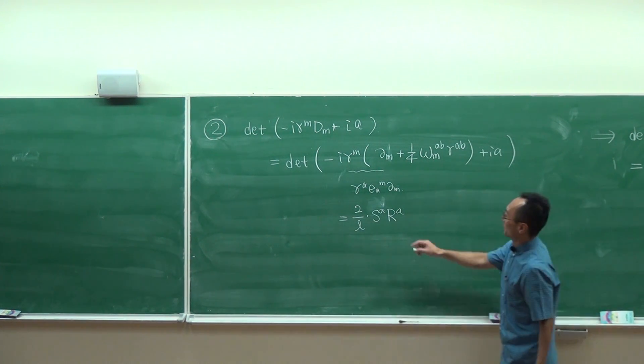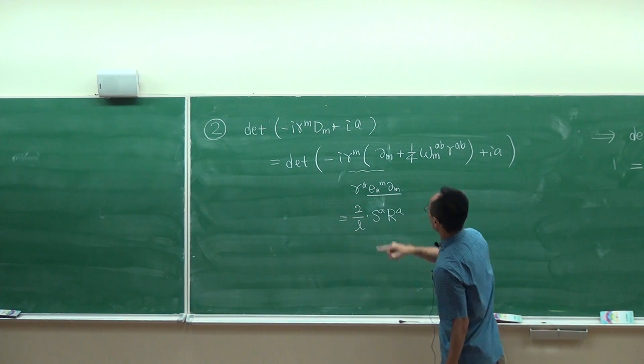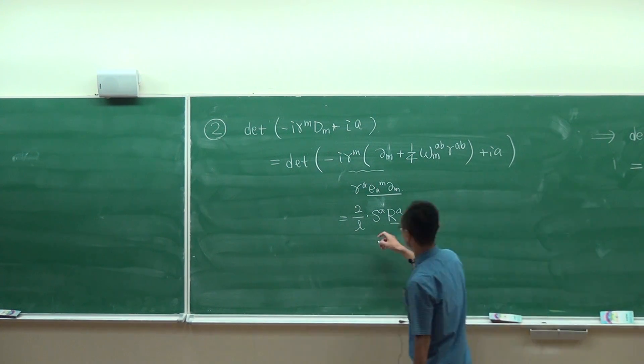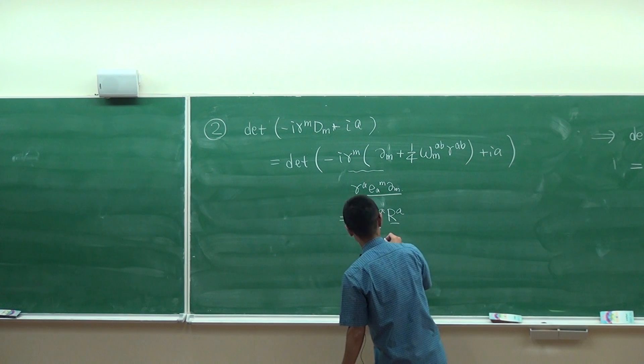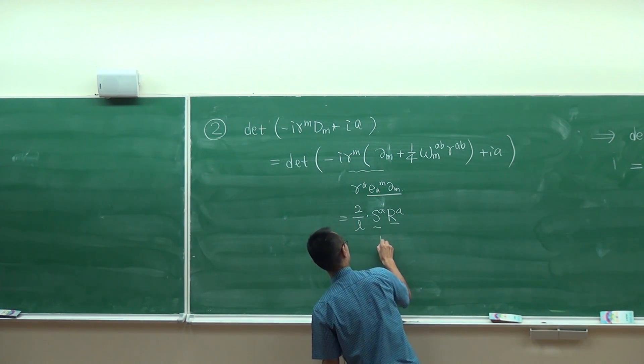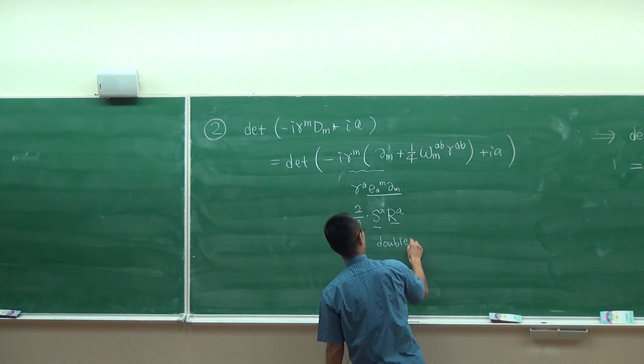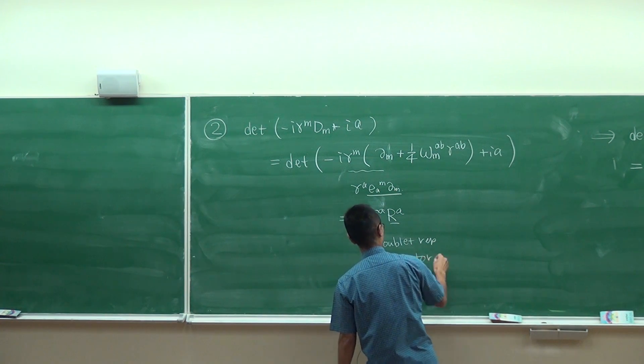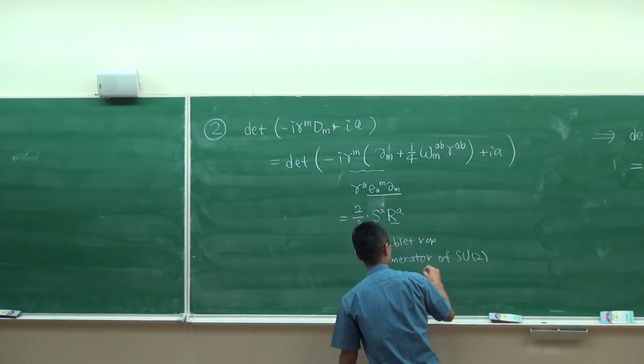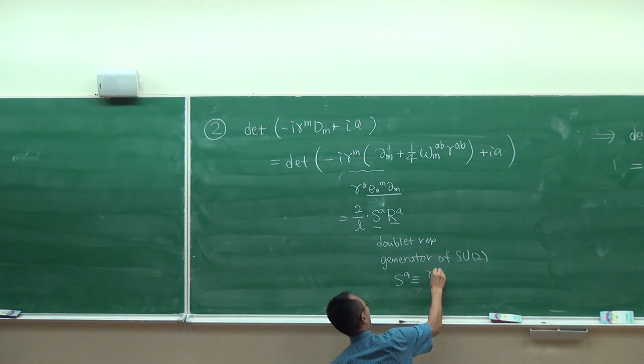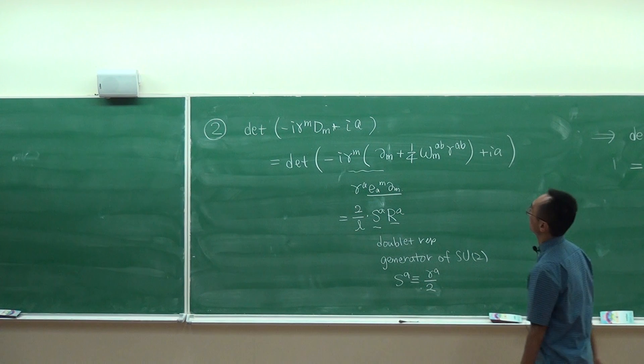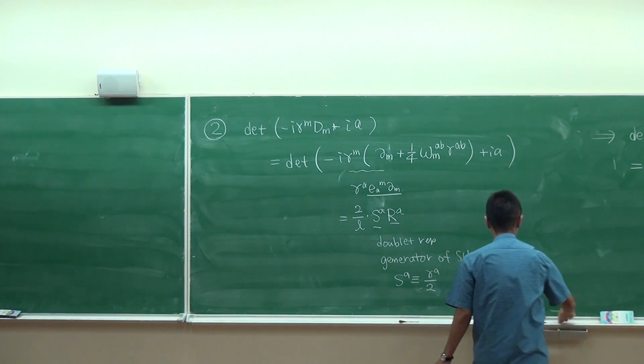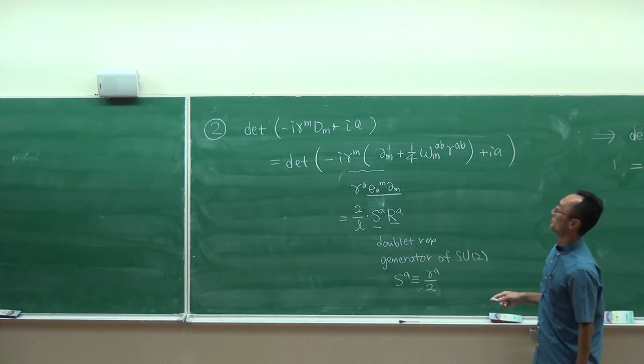As we have seen in my previous lecture, this part can be rewritten like this. And this S^A is a 2×2 matrix, the generator of the SU(2). The first term can be rewritten like this, and the second term which involves the spin connection can also be rewritten.